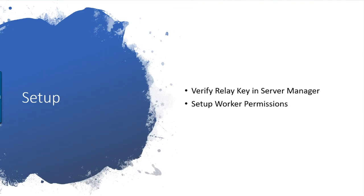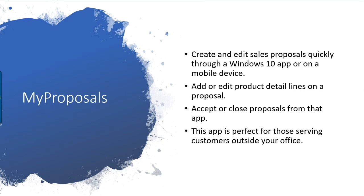Today I want to run through the basic setup, which includes verifying the relay key in Server Manager and setting up worker permissions. The first app we'll cover is My Proposals — where you can create and edit sales proposals quickly from your Windows 10 app or mobile device, add and edit product detail lines, and accept and close proposals. It's a perfect environment for working with customers outside your server ecosystem, whether on the road or in an alternate building.